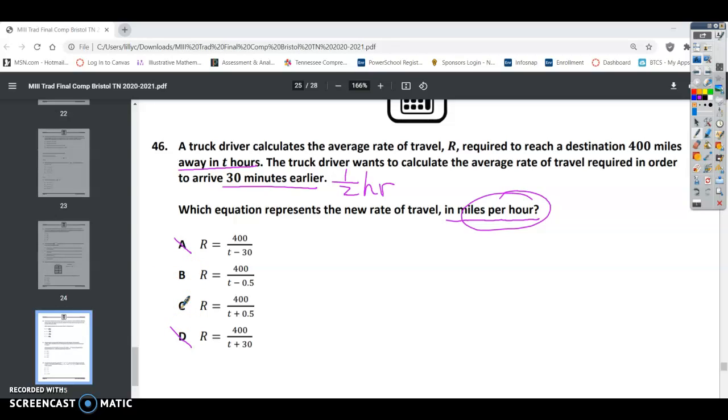So if it wants us to arrive 30 minutes earlier, that means we're actually losing a half hour. So the right equation would be B. So the answer for number 46 is B.